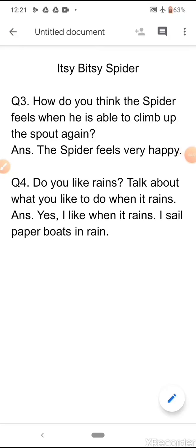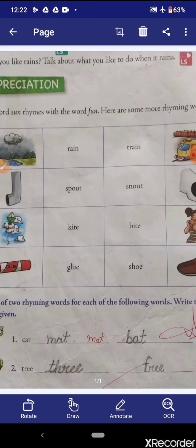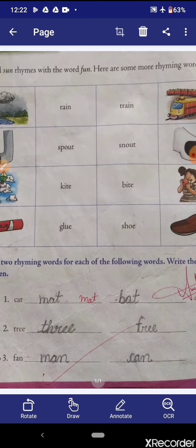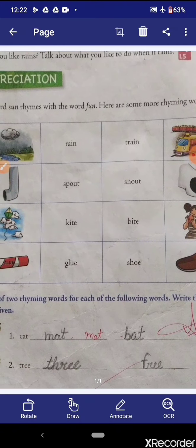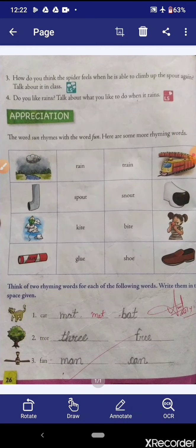I hope students you are doing this with me. Now come to the book exercise. Look at the appreciation. The word sun rhymes with the word fun. Here are some more rhyming words. I am going to read them: rain-train, spout-snout, kite-bite, glue-shoe. These are some examples of rhyming words. Now students, look at the exercise.